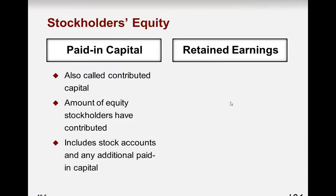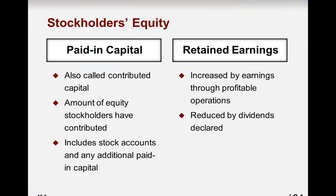The stockholders' equity section of the balance sheet has two sections: the paid-in capital section and the retained earnings section. Paid-in capital, also called contributed capital, is the amount of equity the stockholders have contributed — your common stock, preferred stock, or any additional paid-in capital associated with that stock issue. Retained earnings is the cumulative total of all net income throughout the life of the business less any dividends that have been paid out.